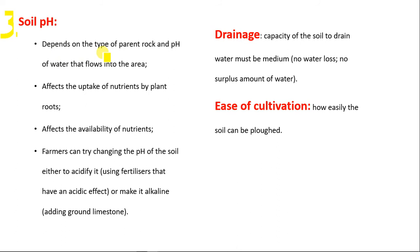Soil pH depends on the type of parent rock and the pH of water that flows within the area. pH is the acidity or alkalinity of a solution. It affects the uptake and availability of nutrients by plant roots. Farmers can try changing the pH of a soil — either acidifying it using fertilizers that have an acidic effect, or making it alkaline by adding ground limestone — to suit the plants being grown.